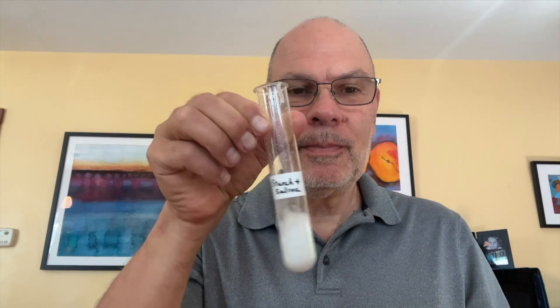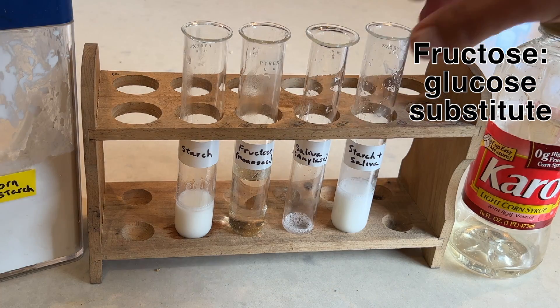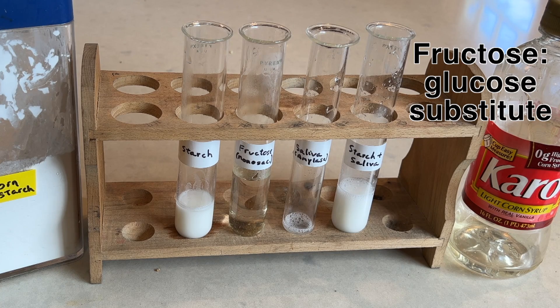I'm going to add my saliva to two test tubes. This one will be our control. It has nothing but saliva. This test tube has starch solution, and I'm going to add some saliva to that test tube too. Now I'm going to set the test tube with starch and saliva aside to give amylase a little bit of time to do its work.